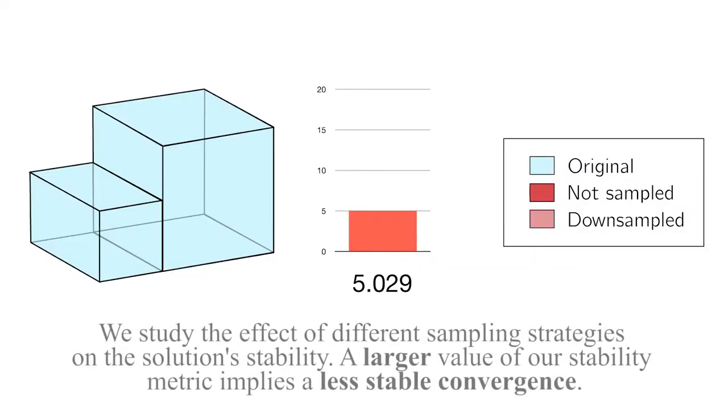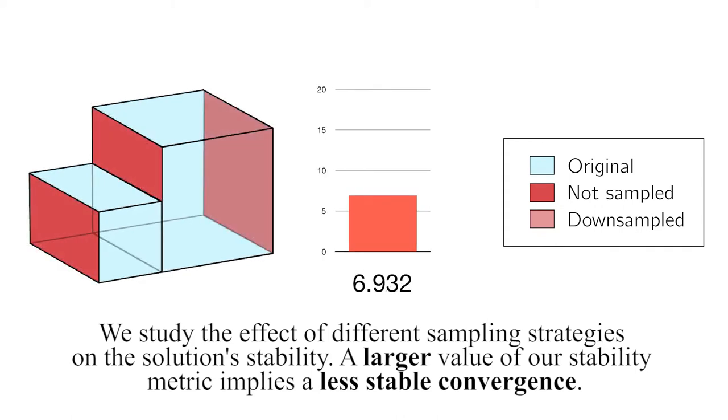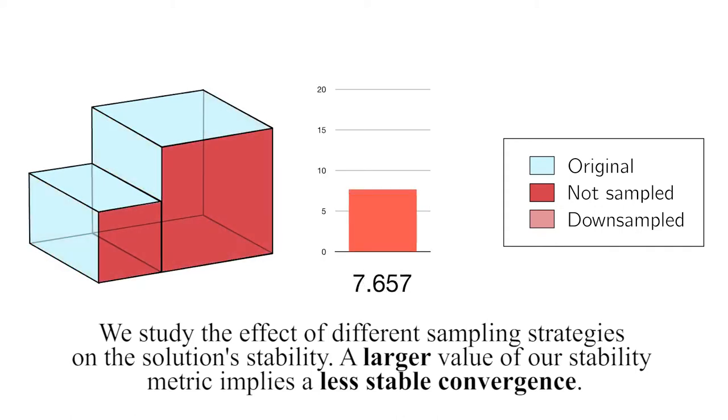We study the effect of different sampling strategies on the solution's stability. A larger value of our stability metric implies a less stable convergence.